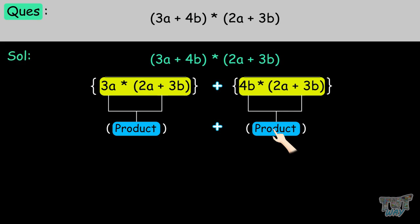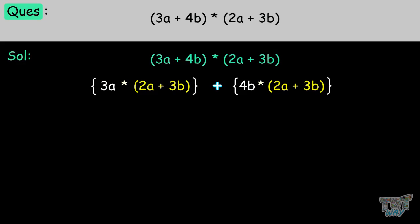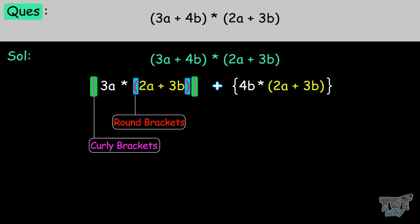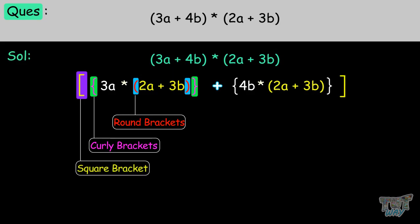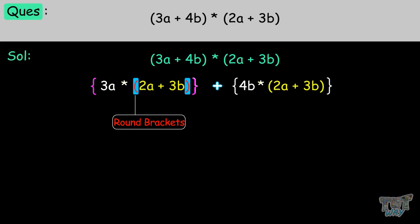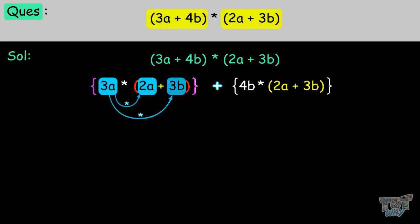Let's solve. First we do 3A times (2A plus 3B), then 4B times (2A plus 3B). We start solving from the innermost brackets — the round brackets. If you have outer brackets, they will be curly brackets, and another set will be square brackets. We always start from the innermost. In this case, we multiply 3A with (2A plus 3B) to get 3A times 2A, which is 6A squared, plus 9AB.